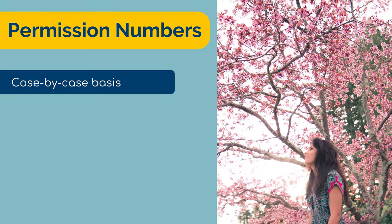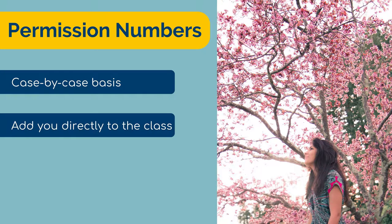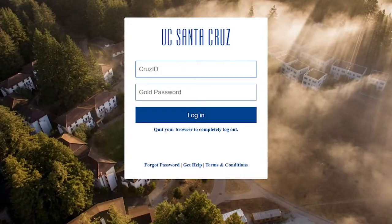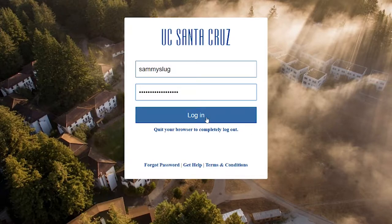Permission numbers or permission codes are given out on a case-by-case basis by advisors and instructors. They are used to directly add you to a class if a prerequisite is blocking you from enrolling, or if the class is closed. Permission numbers are specific to certain classes and can only be used once. An advisor or instructor will provide you with the permission number if you have discussed your situation with them and they have approved your entry into the class.